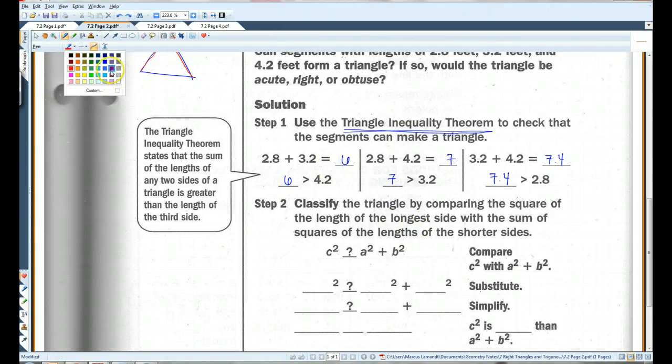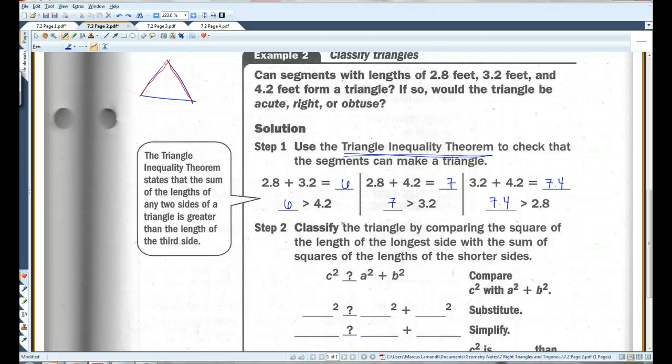Let's go back to blue. All right, c squared, or c, is going to be the longest side, so we're going to use 4.2. So, I got 4.2 squared. We don't know if it's equal, bigger, or less than. a squared is, or a is 2.8, b is 3.2. I'm going to use a calculator for this one.